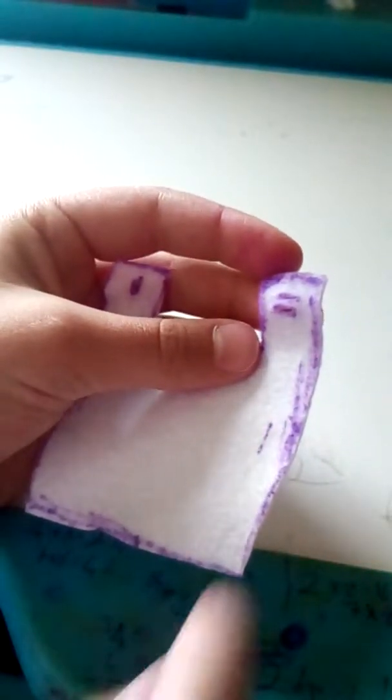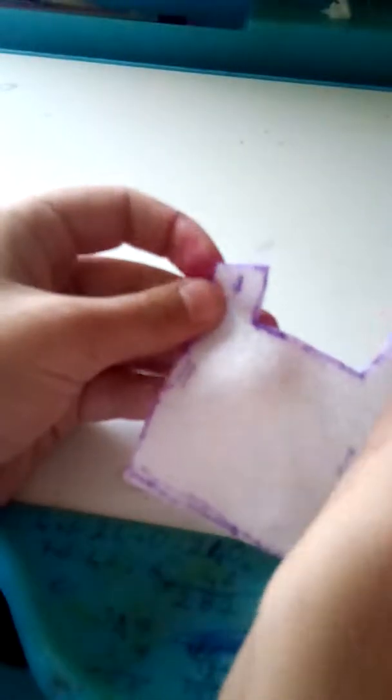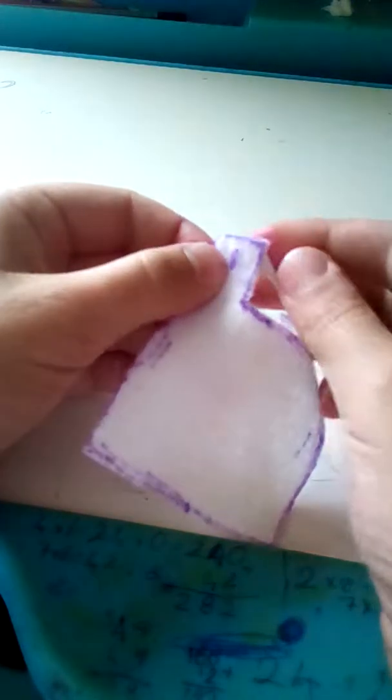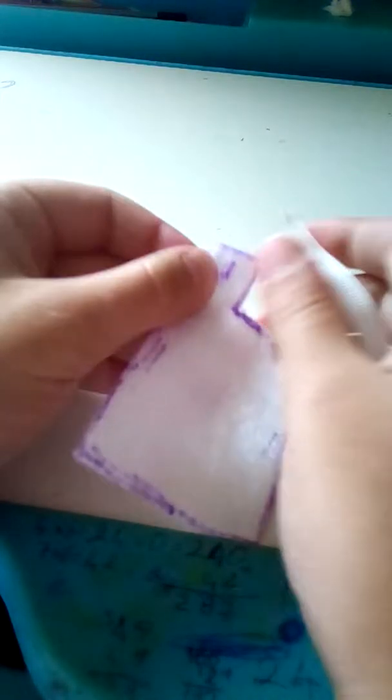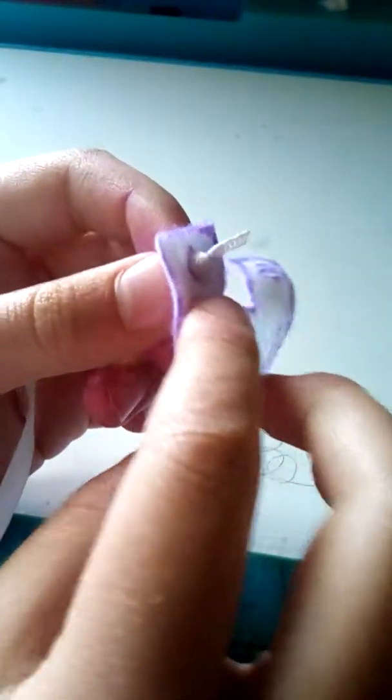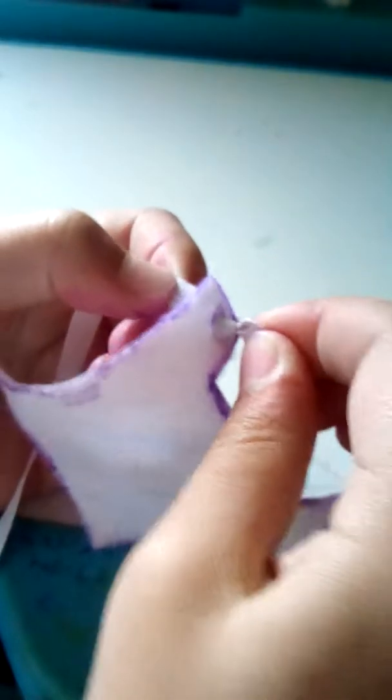So, once you've cut out these two marks here and this mark here, slip your piece of ribbon through this one. Make a knot on the inside so that the ribbon doesn't escape as easily.